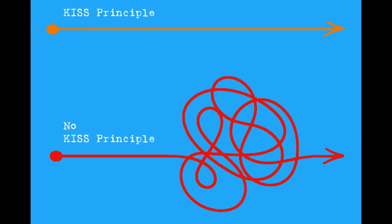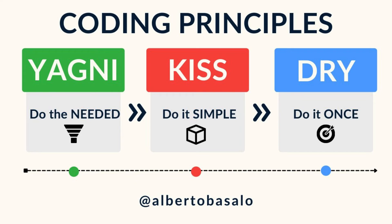Minimalism — use the minimum number of components, features, or steps necessary to achieve the desired outcome. This can reduce bloat and streamline processes. Focus on the essentials — concentrate on what's necessary and critical for the task at hand, and avoid adding unnecessary or extravagant elements.